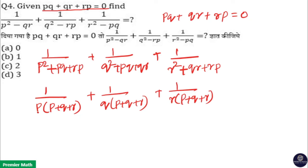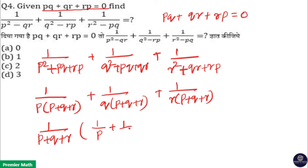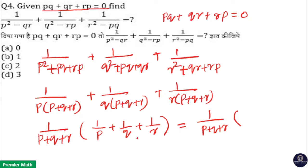Now each term has (p + q + r) in the denominator, so we factor out 1/(p + q + r). The remaining expression is 1/p + 1/q + 1/r, which becomes (pq + qr + rp) / (pqr), all multiplied by 1/(p + q + r).